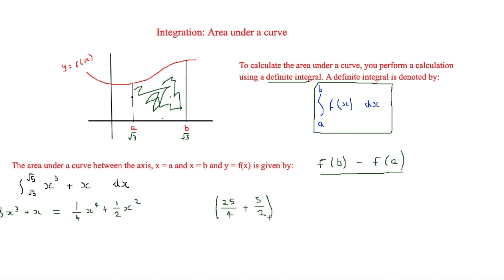Then what you'll do is you'll minus the next bit, and the next bit is going to be by subbing a in, and a is root 3. So if you sub in root 3 into a quarter x to the 4, you would get 9 over 4. And then sub in root 3 to half x squared and you'll get 3 over 2.